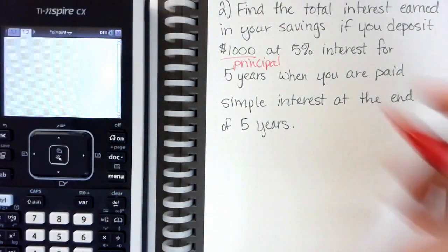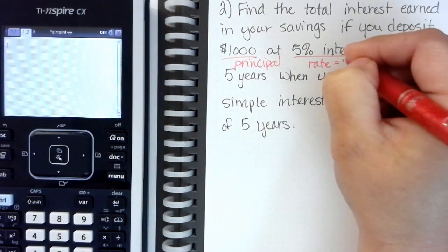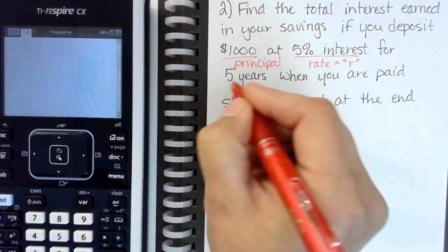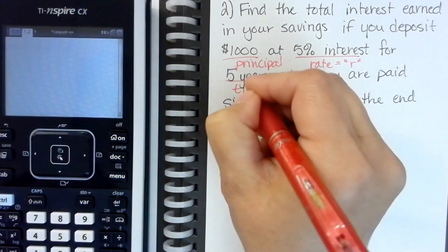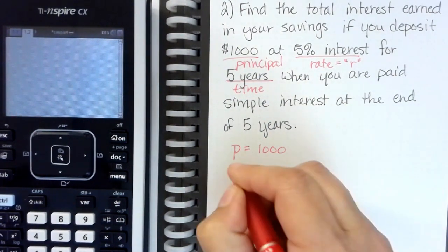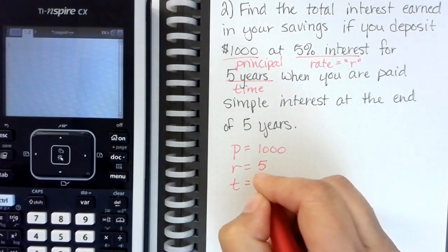At a rate of five percent, so again we're going to just put in the r, not put in the percentage, for a period of five years and that is our time. So we have principle equals one thousand, rate equals five, and time equals five.